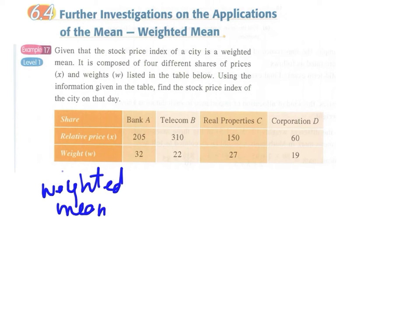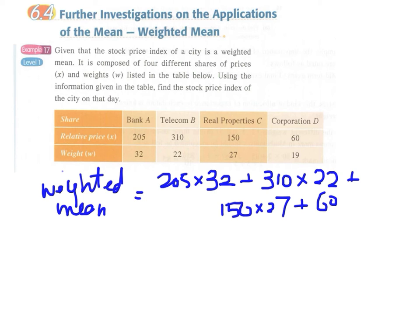We have to multiply all the prices with the corresponding weight and then add them together. Multiply the price with the corresponding weight and then sum it up, and this will be our numerator.